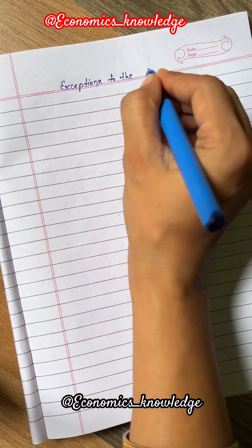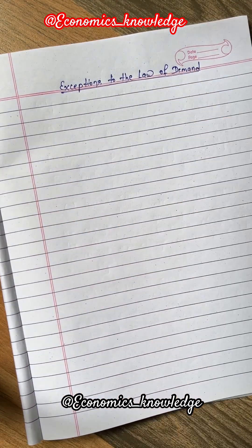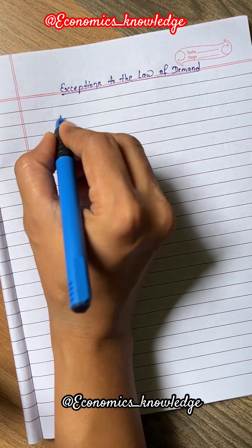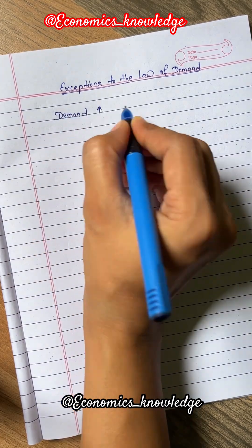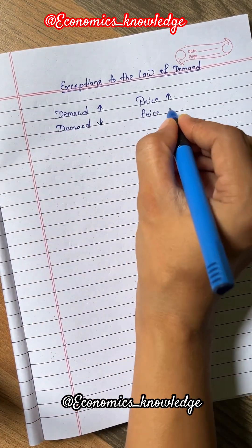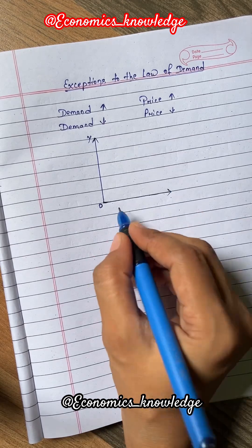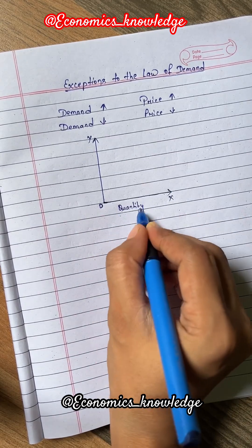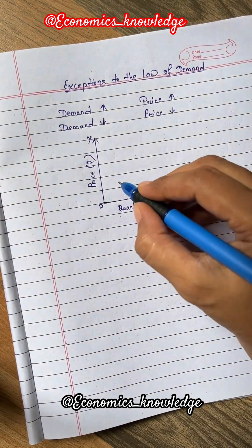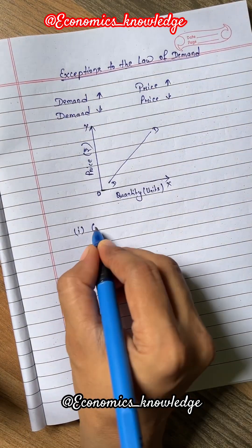Exceptions to the Law of Demand: The Law of Demand has some exceptions. Sometimes, the law of demand may not work in some cases. There are some commodities whose demand increases when their price rises and decreases when their price falls. In this case, the demand curve DD slopes upward from left to right, as shown in the diagram.